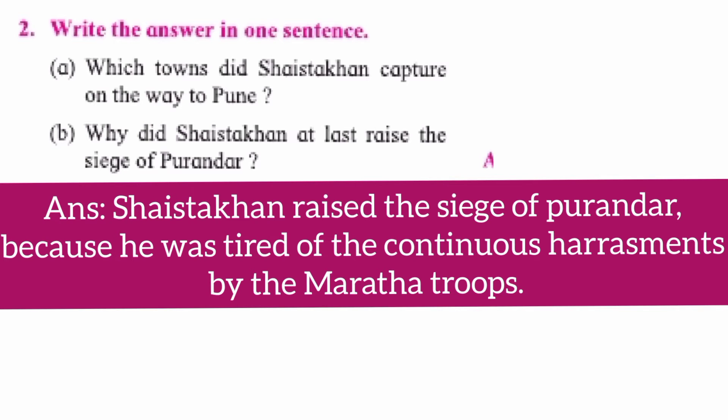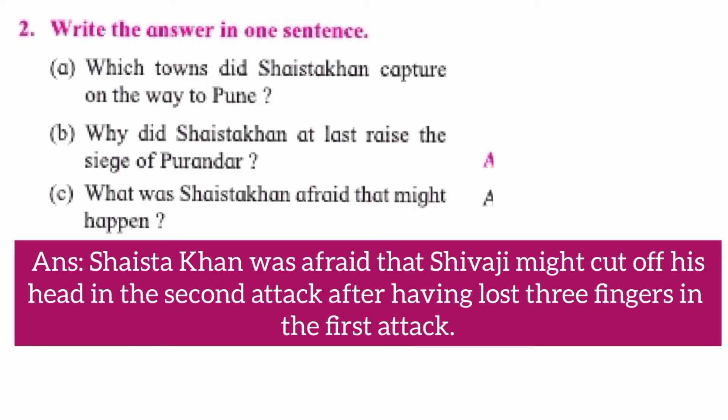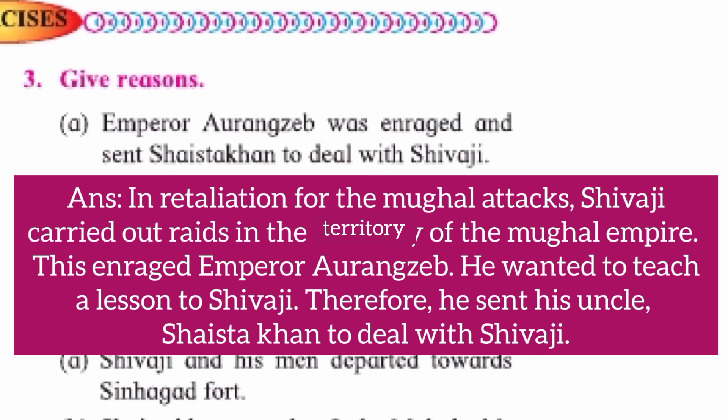Question Two, part C: What was Shahistakhan afraid might happen? Answer: Shahistakhan was afraid that Shivaji might cut off his head in a second attack, after having lost three fingers in the first attack. Question Number Three, part A: Emperor Aurangzeb was enraged and sent Shahistakhan to deal with Shivaji.